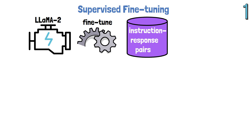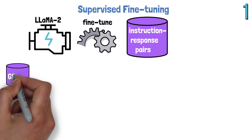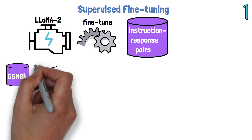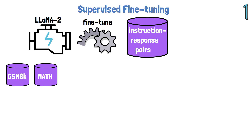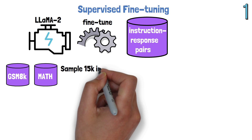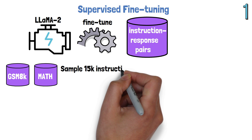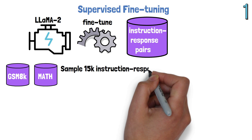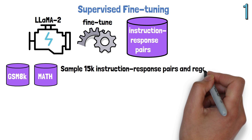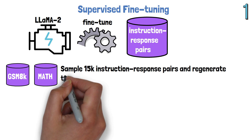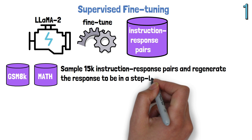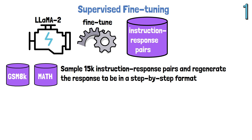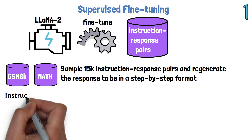How do they build this dataset? They look at two datasets — GSM-8K and Math — that contain math instruction and response pairs. They sample 50K pairs and regenerate the response to be in a step-by-step format, where the response explains in detail the process to reach the solution it provides, rather than just the answer.